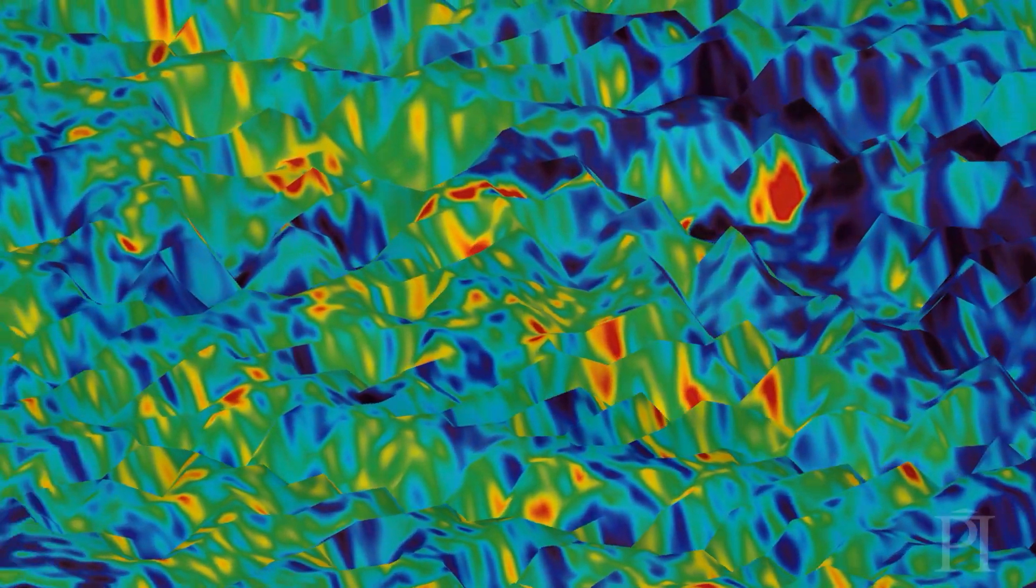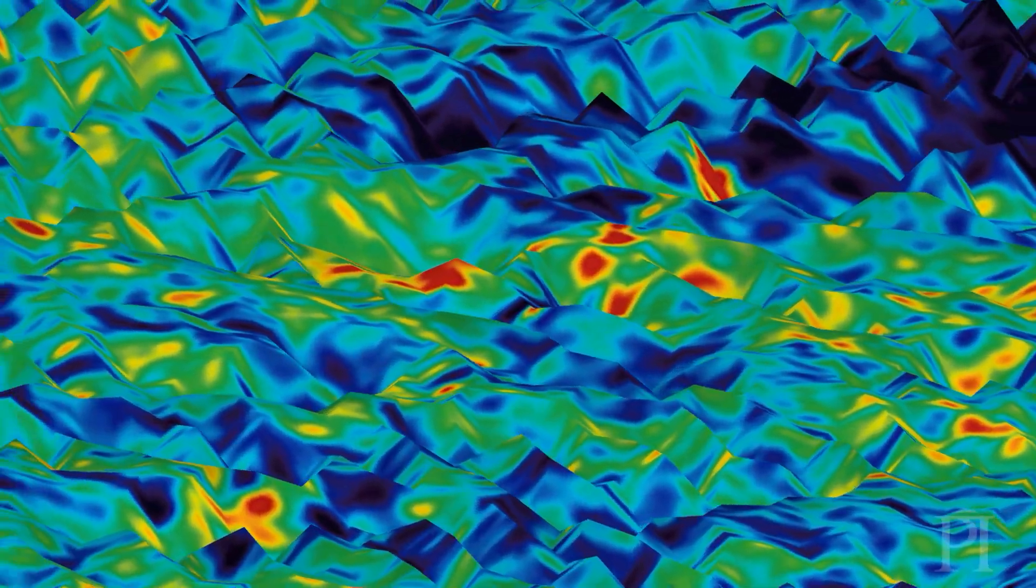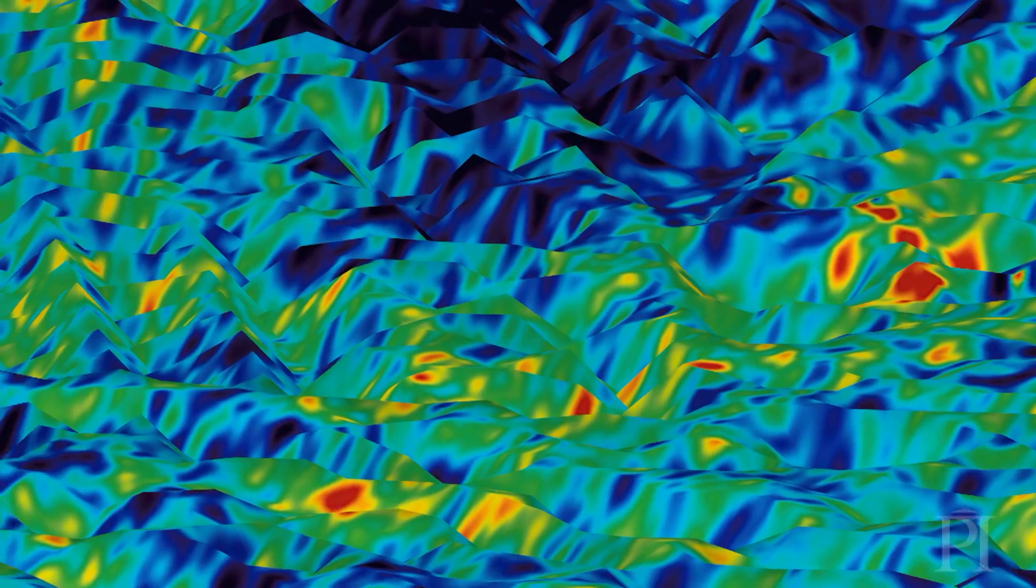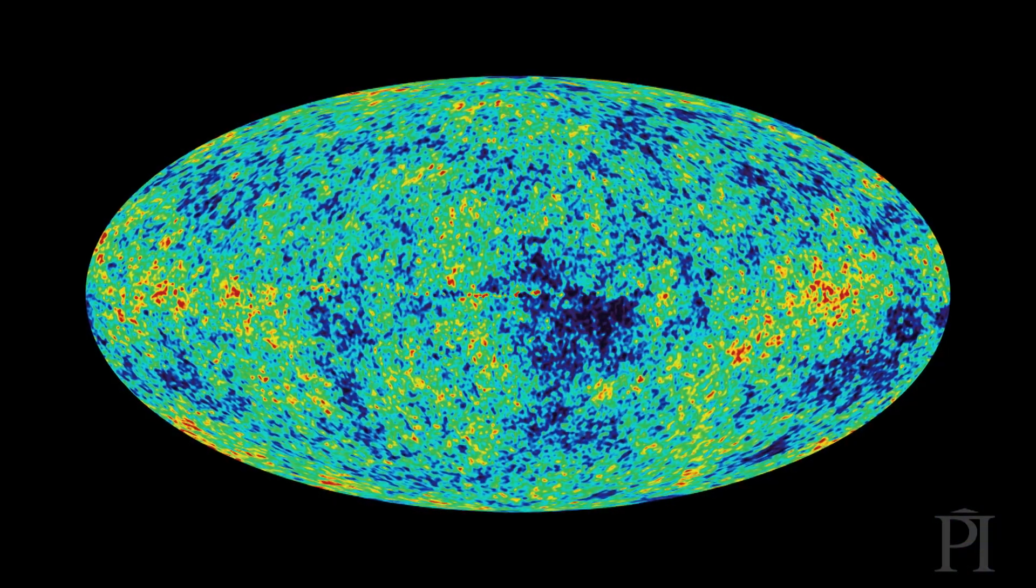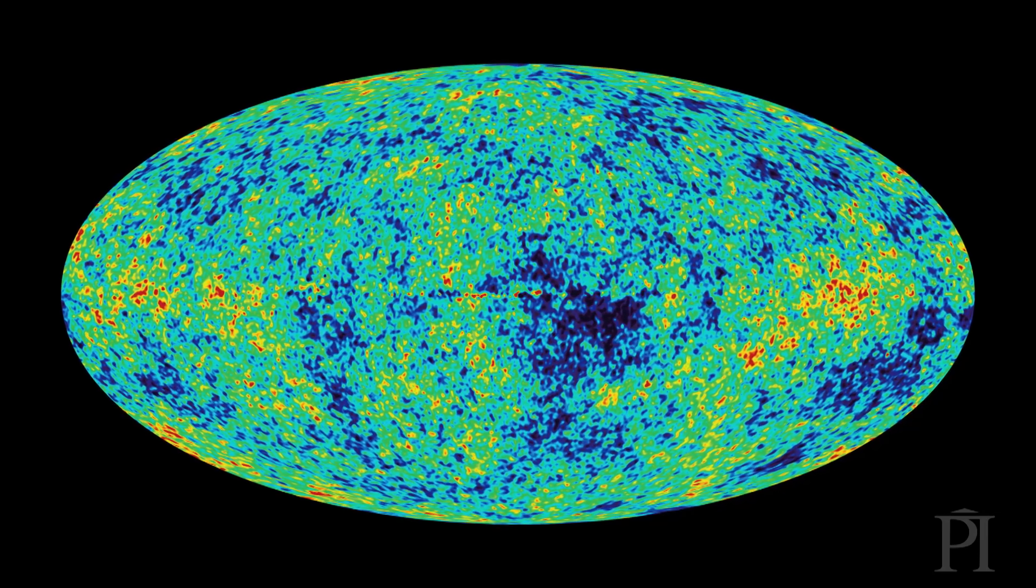What happens is this plasma cools down at a particular time, about four hundred thousand years after the Big Bang, things have become cold enough that neutral hydrogen can form. And that is the moment when the cosmic microwave background is formed. We're looking at light from that era.